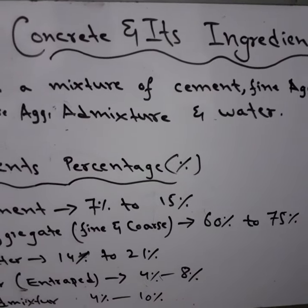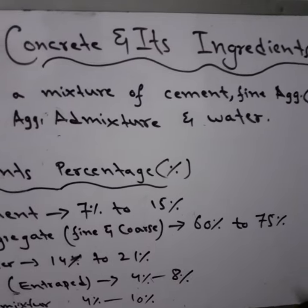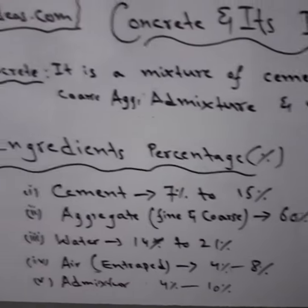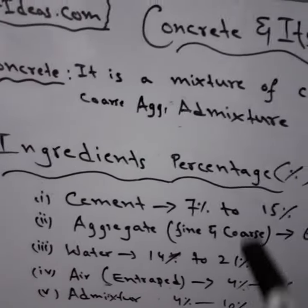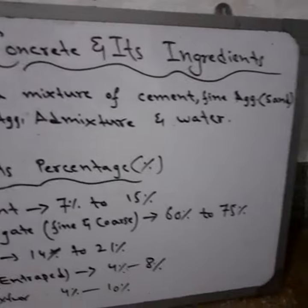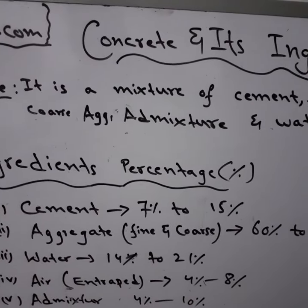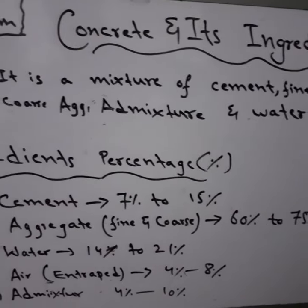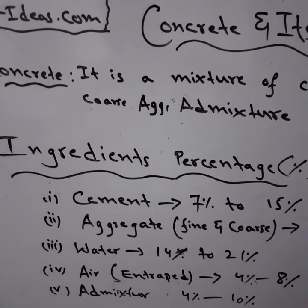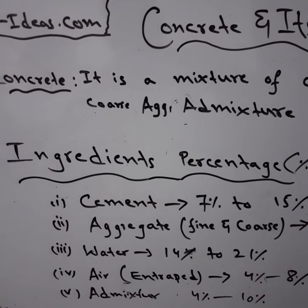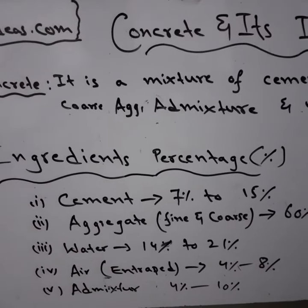Assalamu alaikum, welcome. Today we will discuss concrete and its ingredients. Concrete is a mixture of cement, fine aggregate (normally sand), coarse aggregate, some admixture, and water. It depends upon the ratios used in construction — that may be 1:1:2 or 1:2:3 or any type of ratio normally used on a construction site.